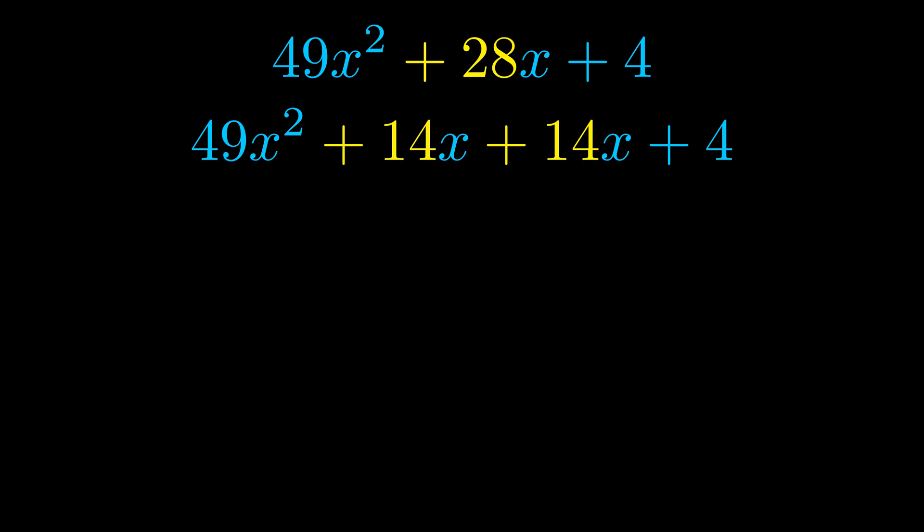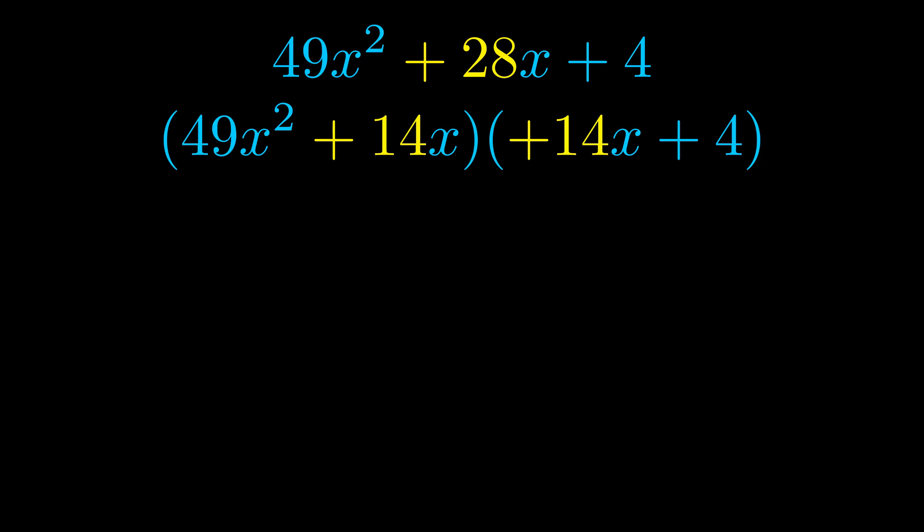Once we've done this, we go ahead and we put parentheses around the first term and the last term. And we do that so that we can take the greatest common factor out of both terms. We can see the greatest common factor is now outside in green.